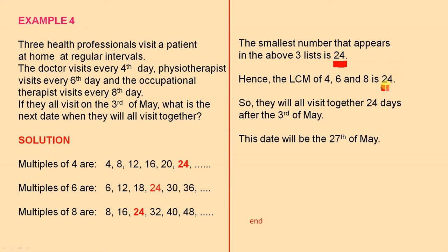So how does that help us solve the problem? They will all visit together 24 days after the 3rd of May. So 3 plus 24 is 27, meaning this date will be the 27th of May. So this video has introduced the idea of LCM, and we've just seen an example of how to apply the LCM in real life.